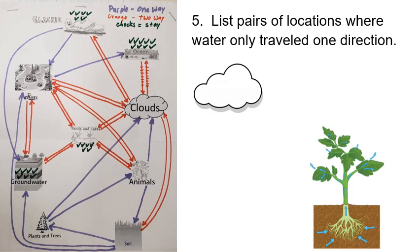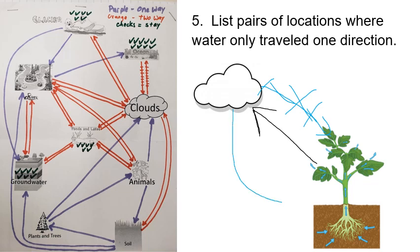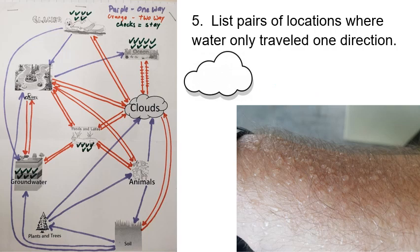Now let's talk about pathways that are connected but only go one direction. Water from a plant can go to a cloud — plants transpire, throwing water up into the air to help form clouds. But water from a cloud cannot go straight into a plant. It can rain on a plant, but that's not how a plant takes in water. Water has to fall into the soil first, where the plant's roots are. So this is a one-directional relationship: water goes from plants to clouds, not the other way.